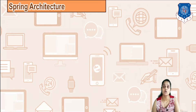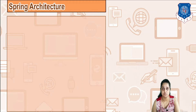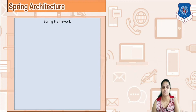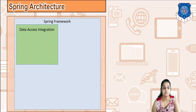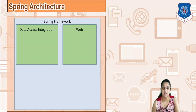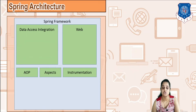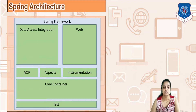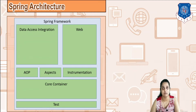We shall now move on to the architecture of Spring. The Spring framework is basically divided into 5 different parts: the first part is Data Access, second is Web, third is AOP Aspect and Instrumentation, next is Core Container, and next is Test. These are the 5 layers or parts into which the Spring framework is divided.